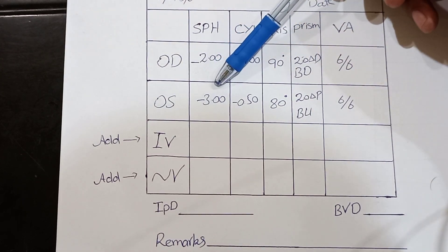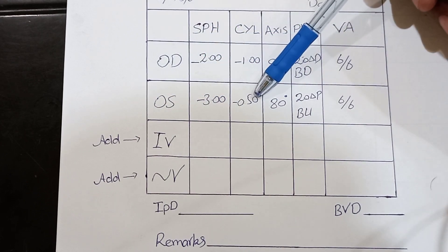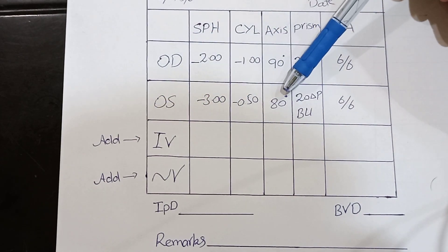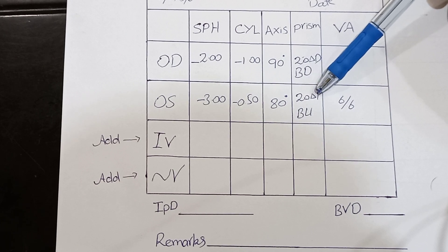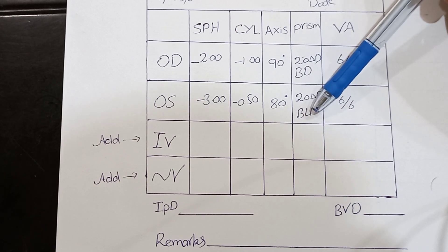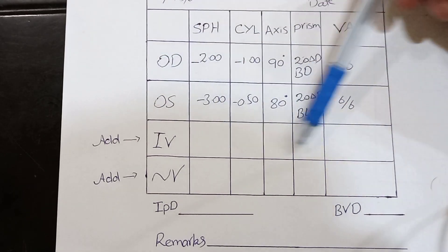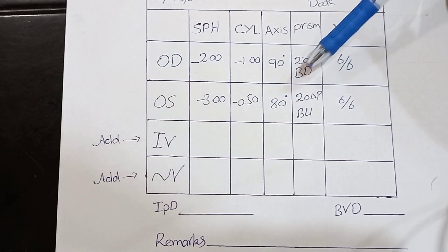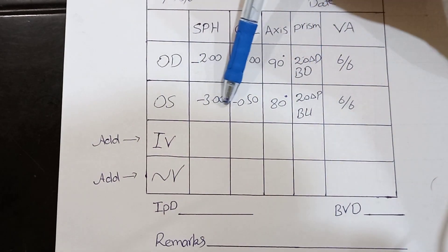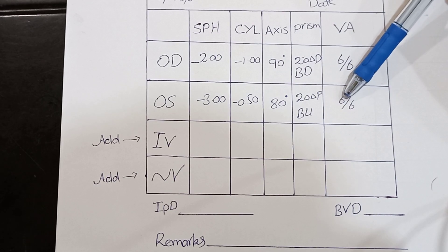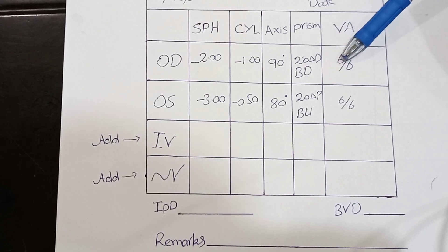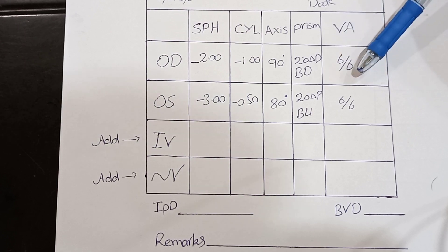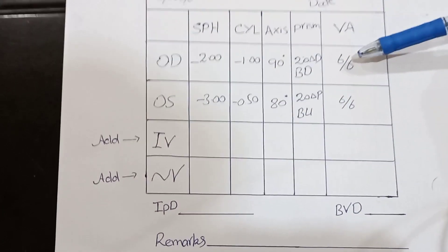These are all supposed values, not real values. The visual acuity of the patient after these prescribed values is 6/6. Visual acuity can vary — it could be 6/16, 6/36, 6/24, 6/12, 6/18, 6/9, or 6/6. You write the visual acuity in the designated box.